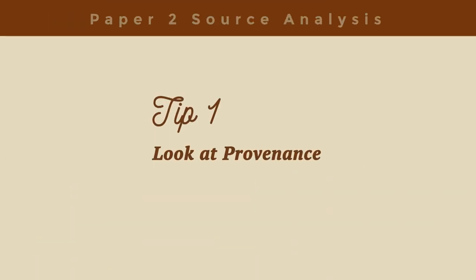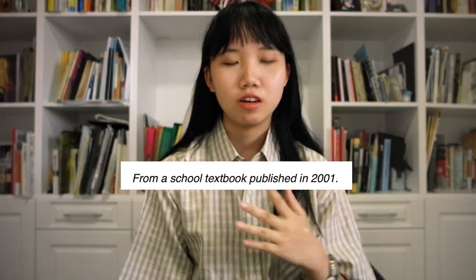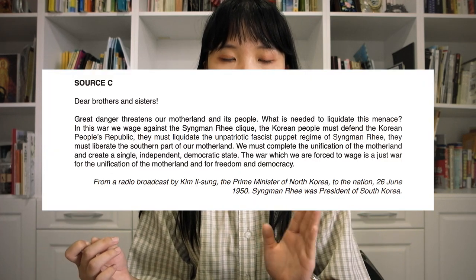Tip one: look at the provenance. It will include when the image or text was produced, or where the text is from. So obviously, a source written in the USA will have a bias towards the US. An extract from a history book should usually be objective, but you should also look at where the book is from.